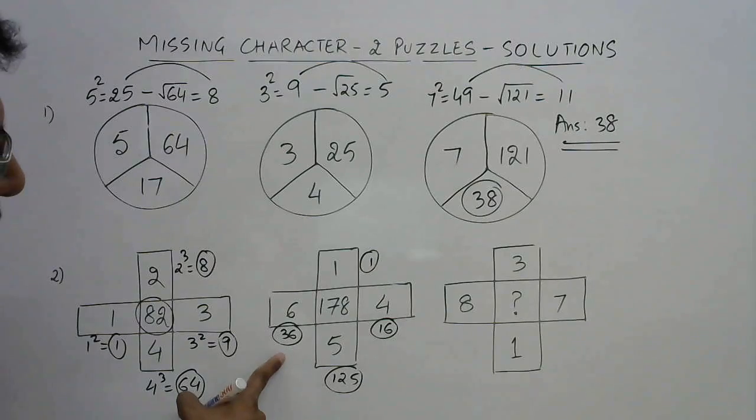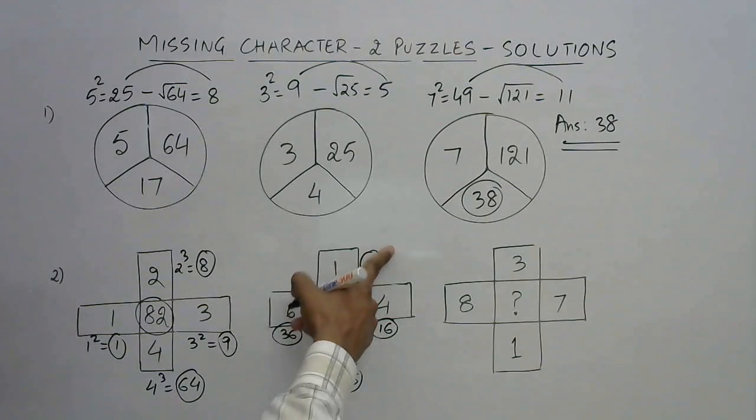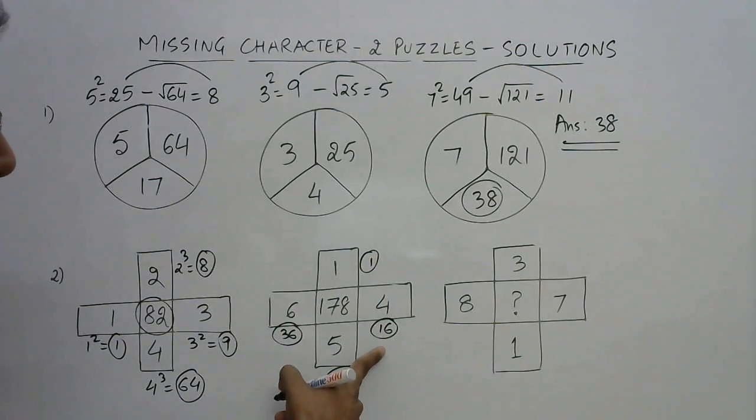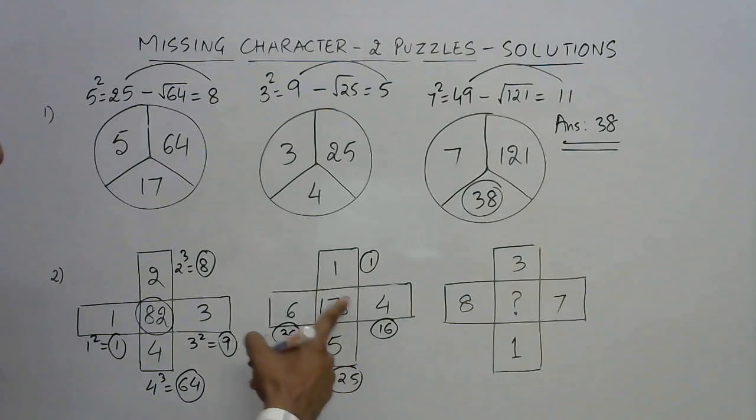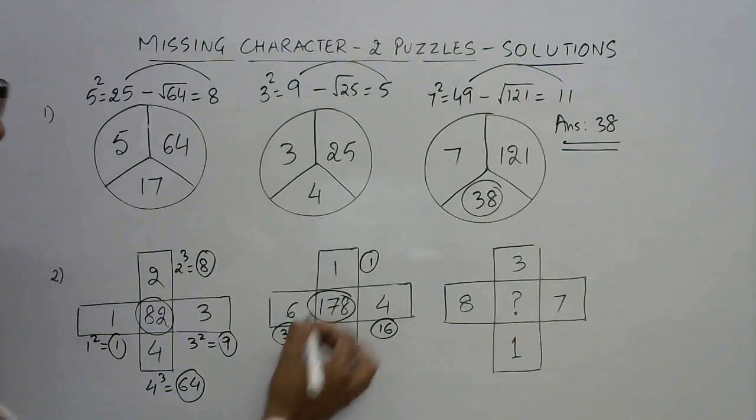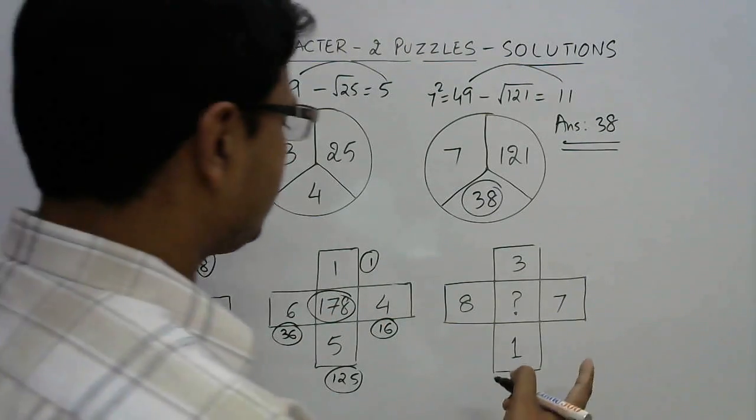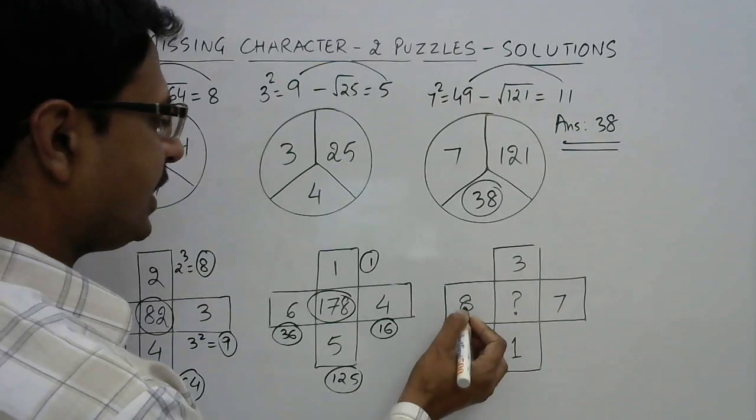Now add 125 plus 36 is 161, 162. And 162 plus 16 is 178.